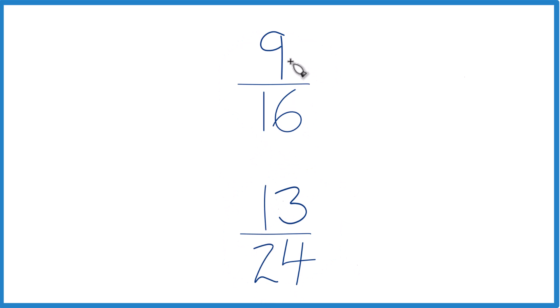First, you could just take a calculator, divide 9 by 16, get a decimal, and then divide 13 by 24 and get a decimal. And you'll see that 13-24ths, that gives you a larger decimal. So 13-24ths, that's greater than 9-16ths.